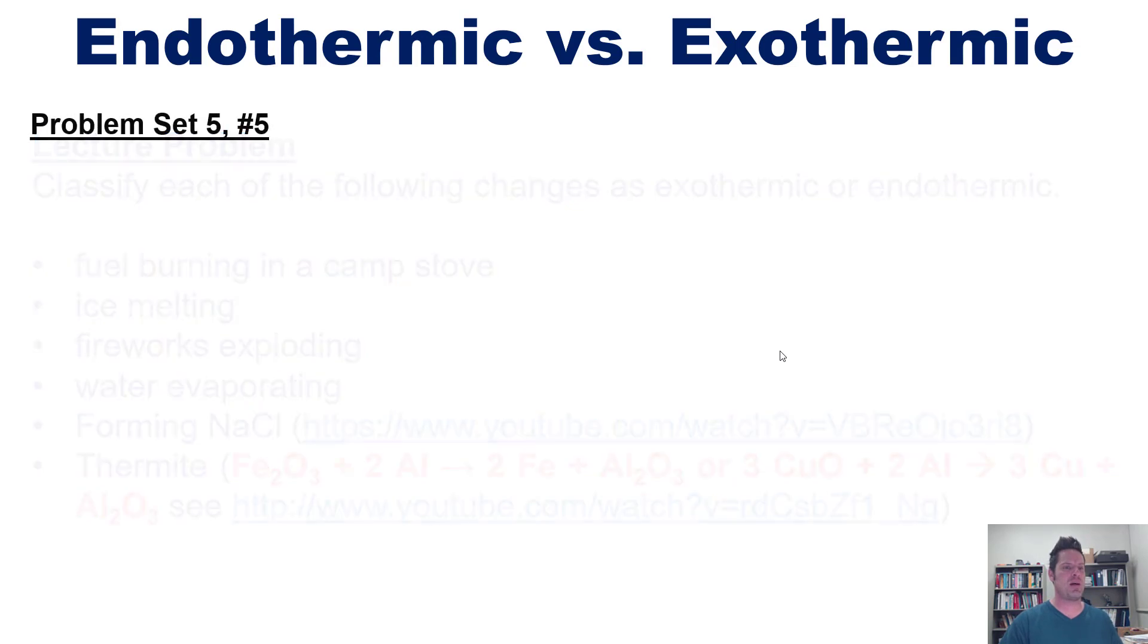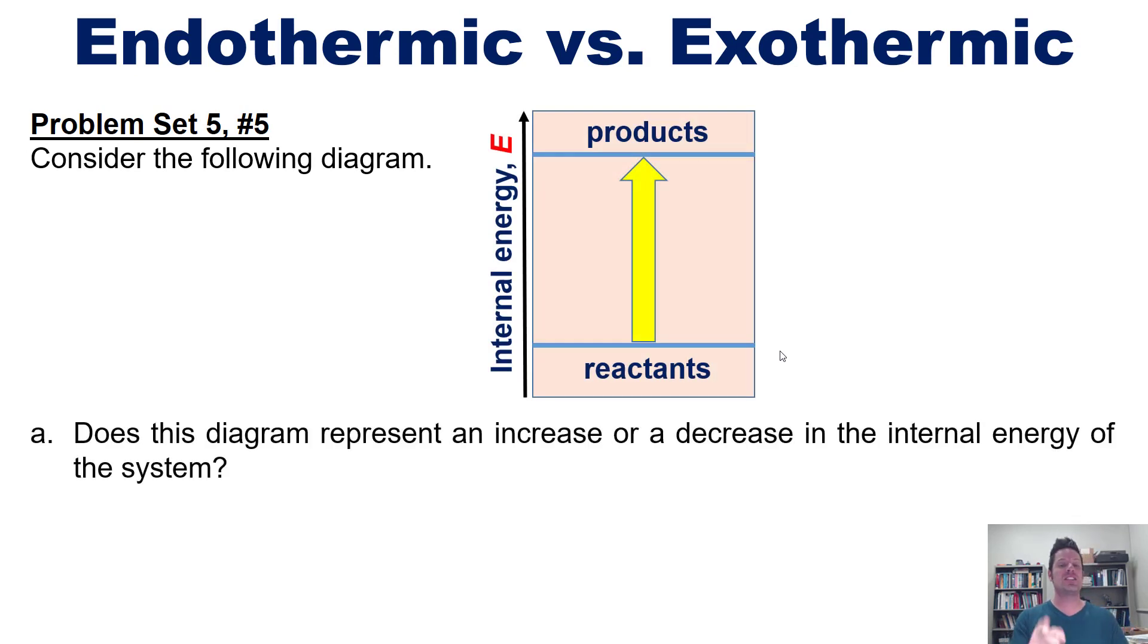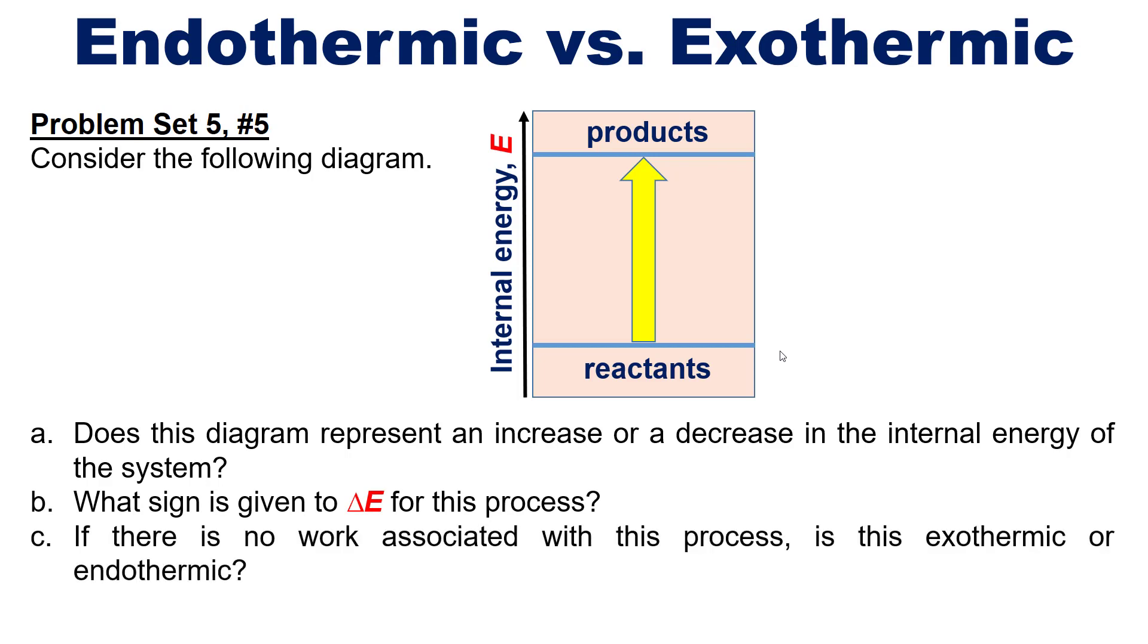Let's go on to another lecture problem then from my university students homework set. Consider the following diagram and then please answer these questions. First, does this diagram represent an increase or decrease in the internal energy of the system? Next, what sign is given to the delta E for this process? And last, if there is no work associated with this process, is it exothermic or endothermic?